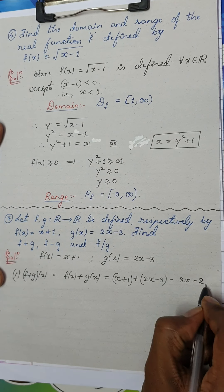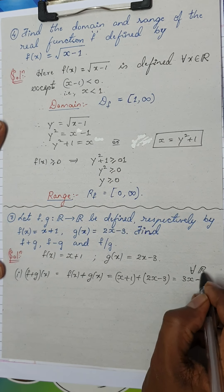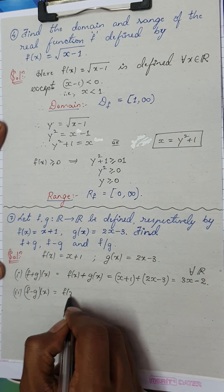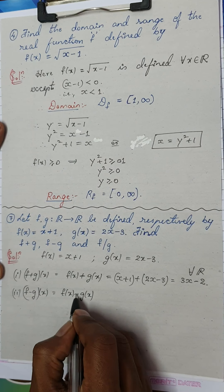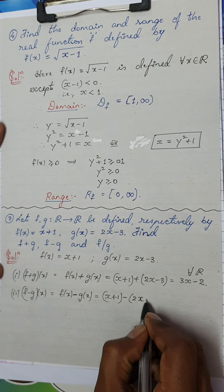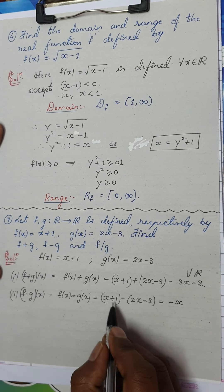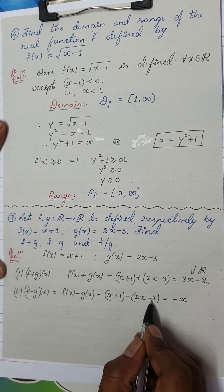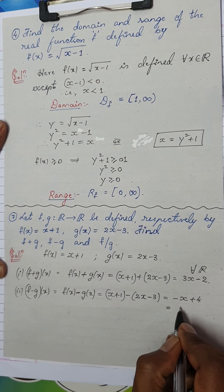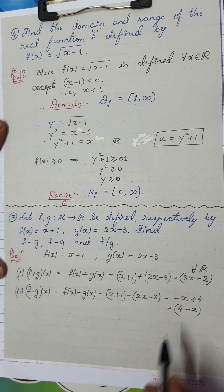For f + g: (f + g)(x) = f(x) + g(x) = (x + 1) + (2x − 3) = 3x − 2, for all real numbers. For f − g: (f − g)(x) = f(x) − g(x) = (x + 1) − (2x − 3) = x + 1 − 2x + 3 = −x + 4 = 4 − x.